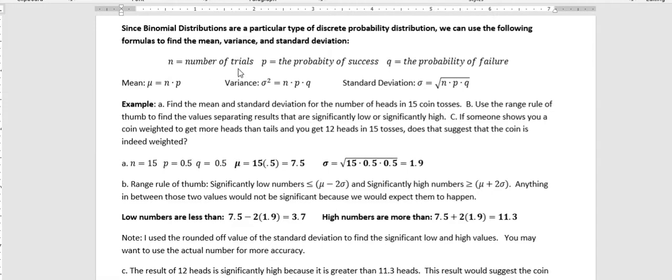So remember that n is the number of trials, p is the probability of success, and 1 minus p is q, and that's the probability of failure. So if your probability of success is 20, your probability of failure is 80.